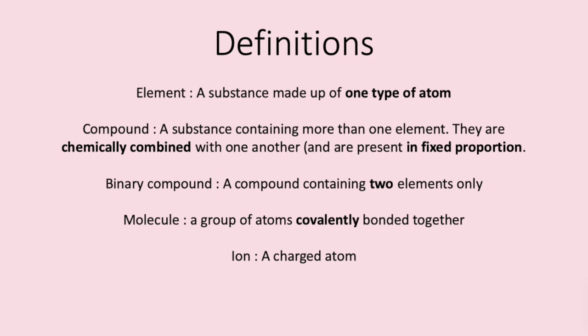Before we start you need to be aware of a few definitions. An element is a substance made up of one type of atom. Elements are found on the periodic table such as sodium and oxygen. A compound is a substance containing more than one element. They are chemically combined with one another and are present in a fixed proportion such as sodium chloride or magnesium oxide.